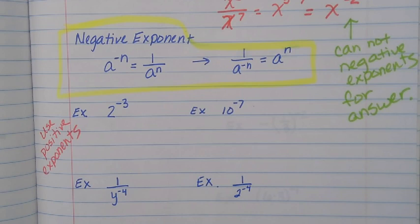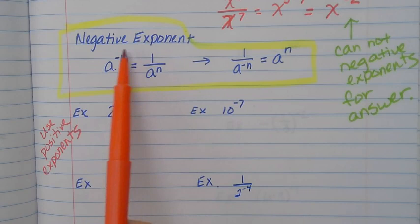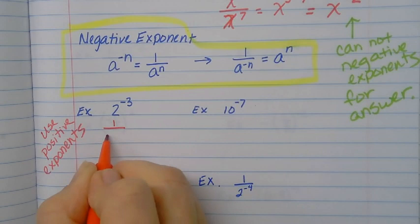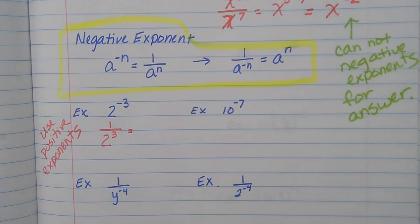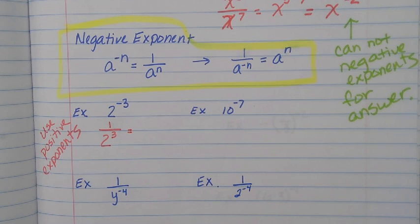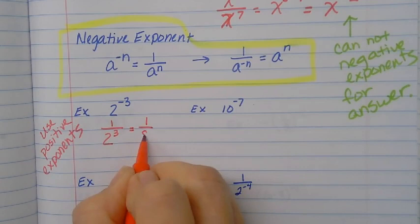Okay, I'm going to start looking at these. So here, two to the negative three — I'm going to follow this model and just take this to the denominator and make it a positive three instead of a negative. Now since that's a number and the exponent is not extremely large, let's go ahead and change it to an actual fraction: two to the third power is eight — two times two is four, times two is eight.